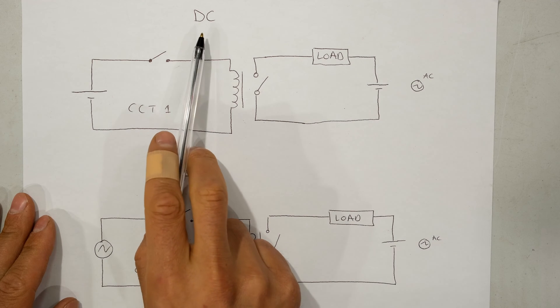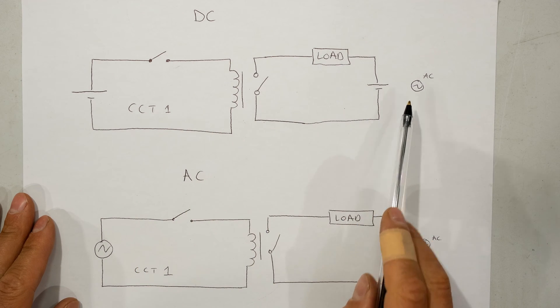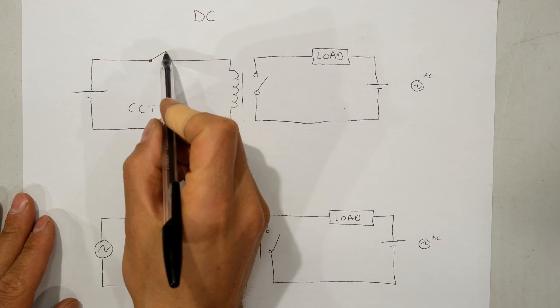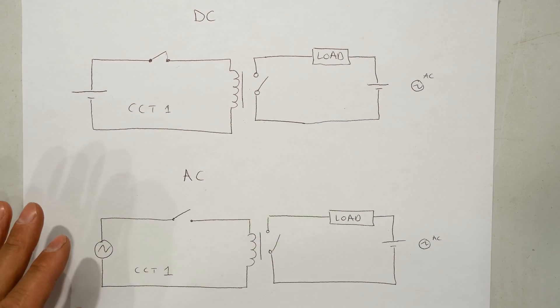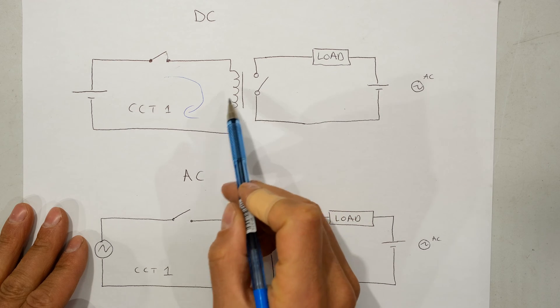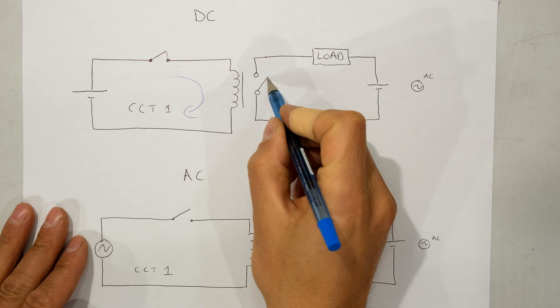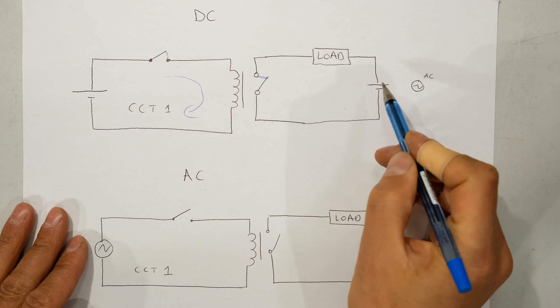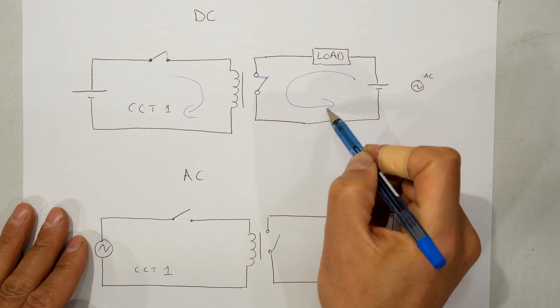In the case of a DC circuit controlling an AC circuit, here I've got a battery, I've got one circuit here. When I close the switch, current will flow in this circuit creating a magnetic field here. This switch will close because of the magnetic force and therefore current can flow like that.